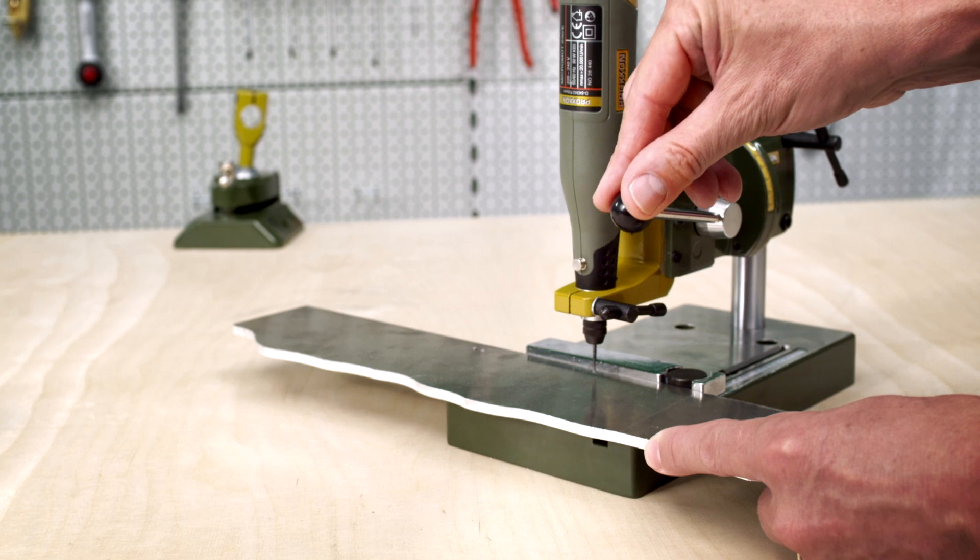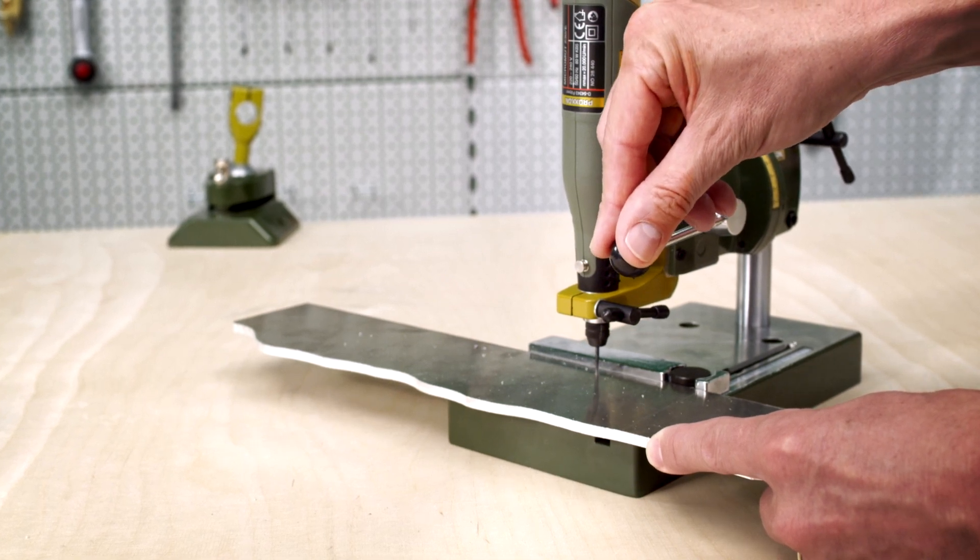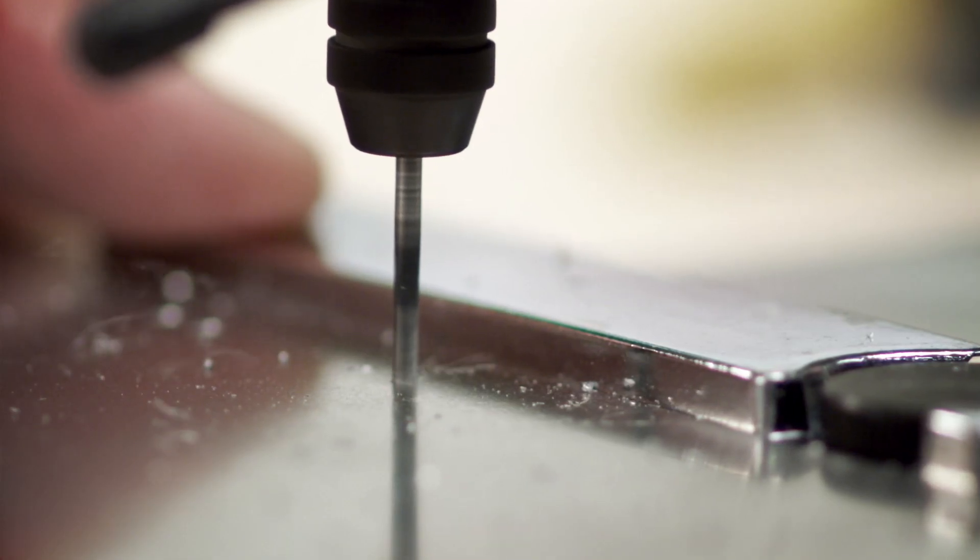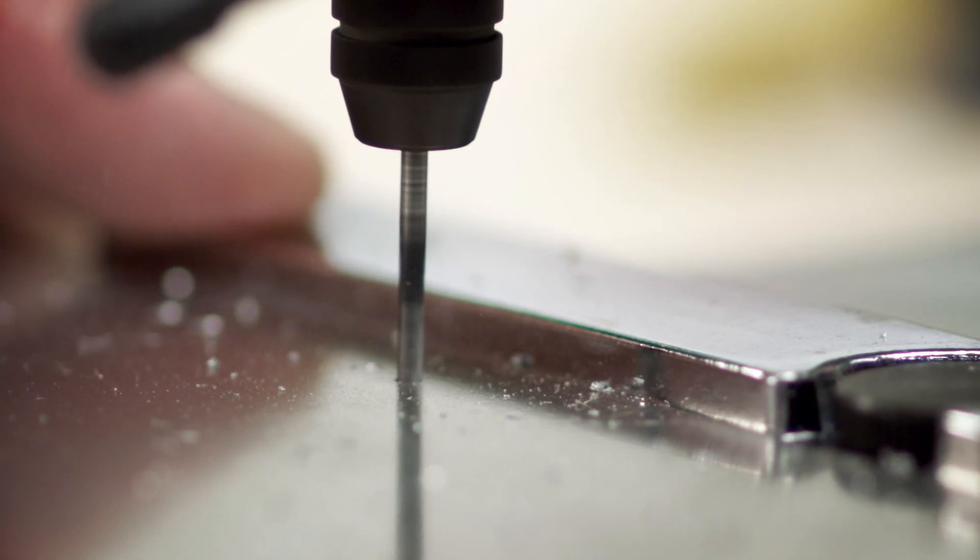With the 20 millimeter collar, the Micromot 230E can be used in our drill stand and in horizontal universal holders.